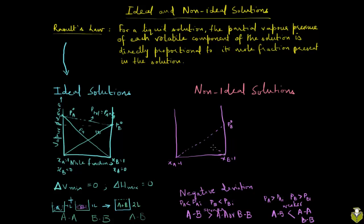Then you have the dotted line for PA. This is PB ideal, this is PA ideal, this is PA0, and this is your P total ideal.